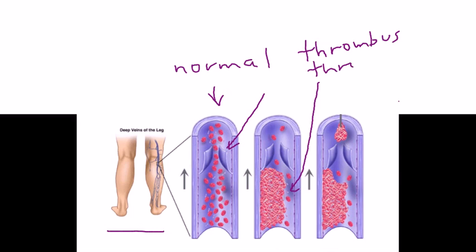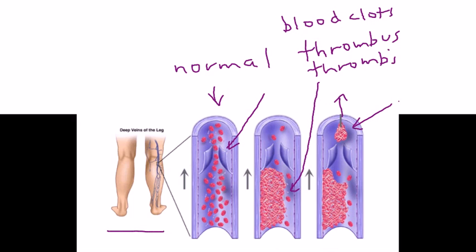This big clump that clearly looks abnormal represents thrombi — thrombus is the singular, thrombi is the plural — essentially your blood clots. What can happen is one of these can branch off and move up the circulation. Once a thrombus starts to move, it's known as an embolus (singular) or emboli (plural).